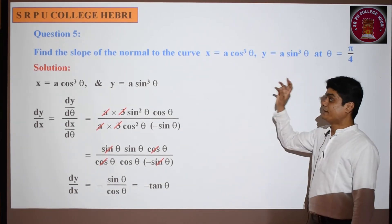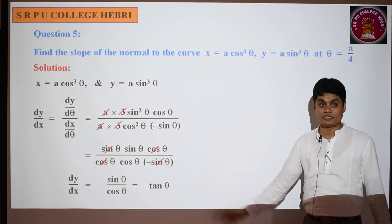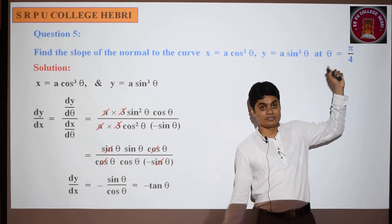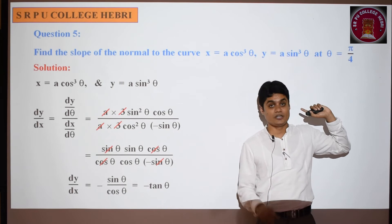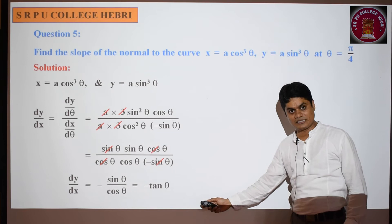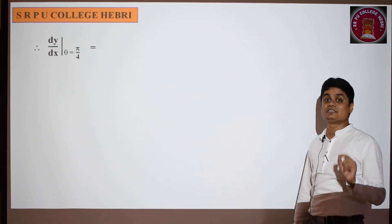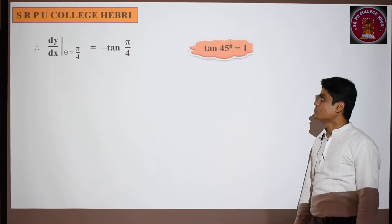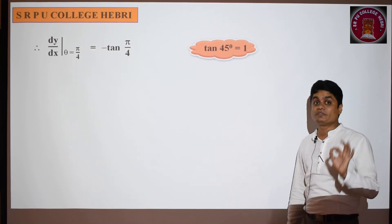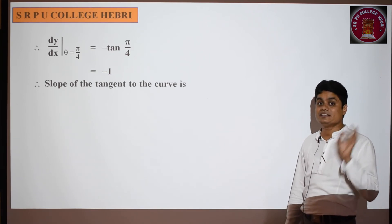Now what is asked? Find the slope of the normal to the curve. We have dy/dx = -tanθ. Substitute θ = π/4: dy/dx = -tan(π/4) = -1. So the slope of the tangent to the curve at θ = π/4 is -1.